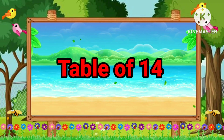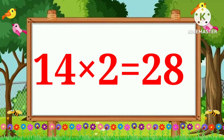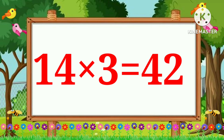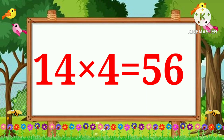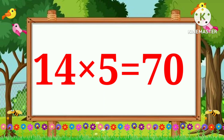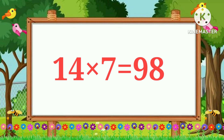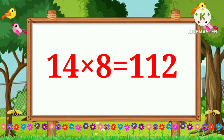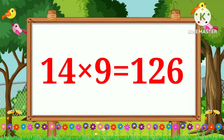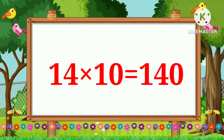Table of Fourteen. 14 6 is 84. 14 7 is 98. 14 8 is 112. 14 9 is 126. 14 10 is 140.